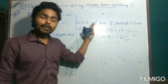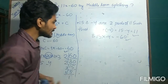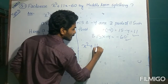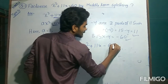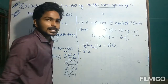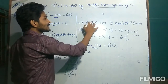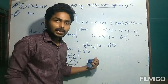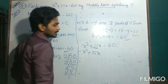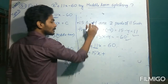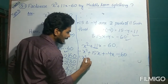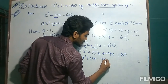The middle part has been divided into two parts. So the quadratic polynomial x squared plus 11x minus 60 can now be written as x squared plus — since the middle term has been split into two parts, the first part is plus 15x and the second part is minus 4x — then minus 60. So we have x squared plus 15x minus 4x minus 60.